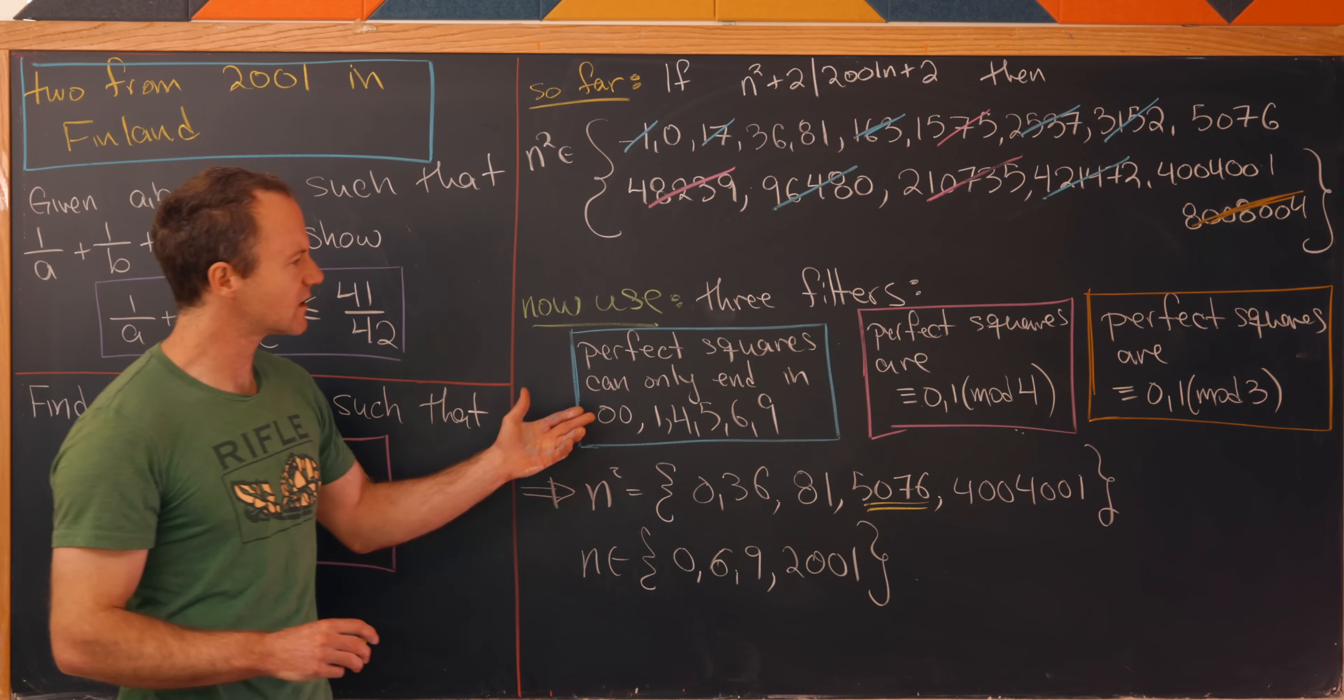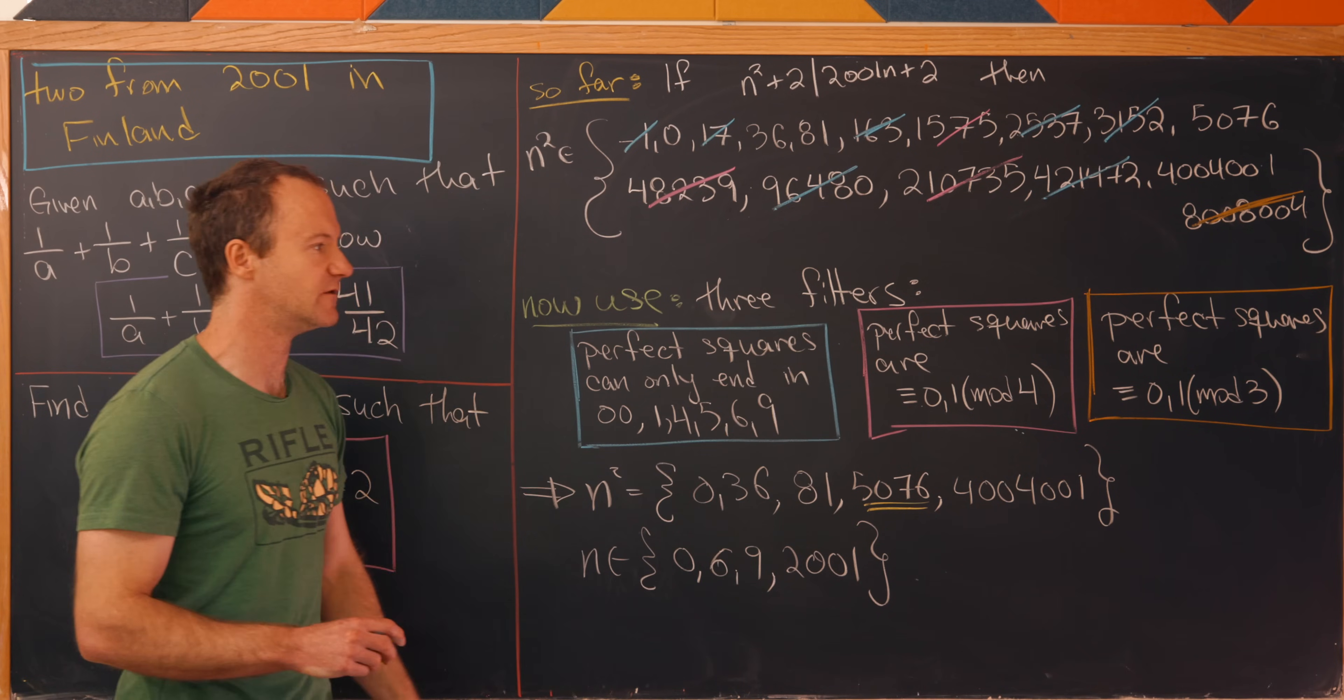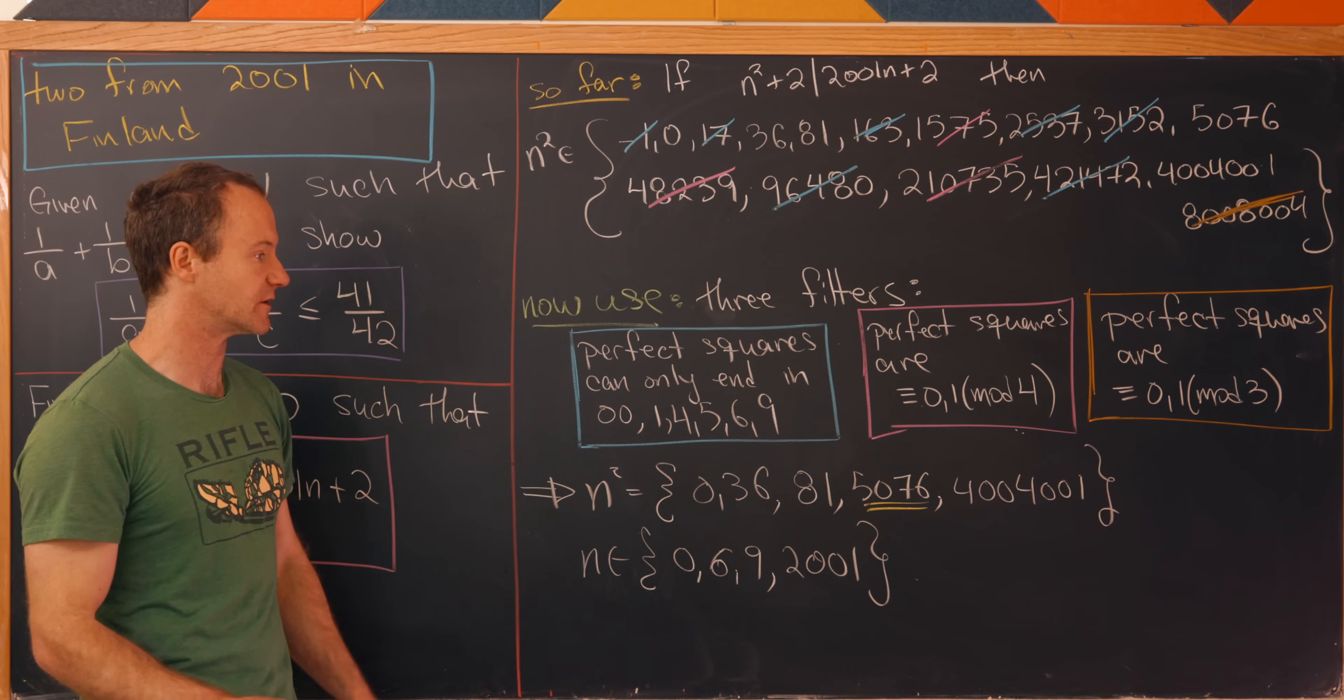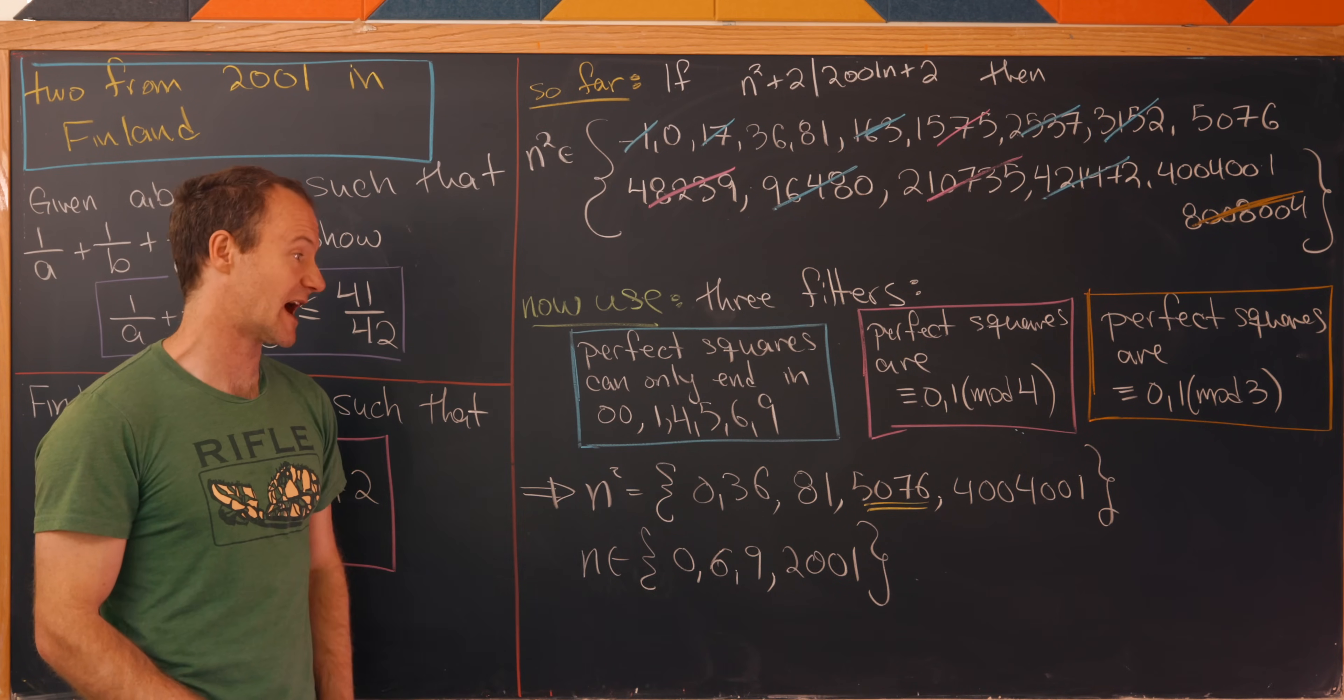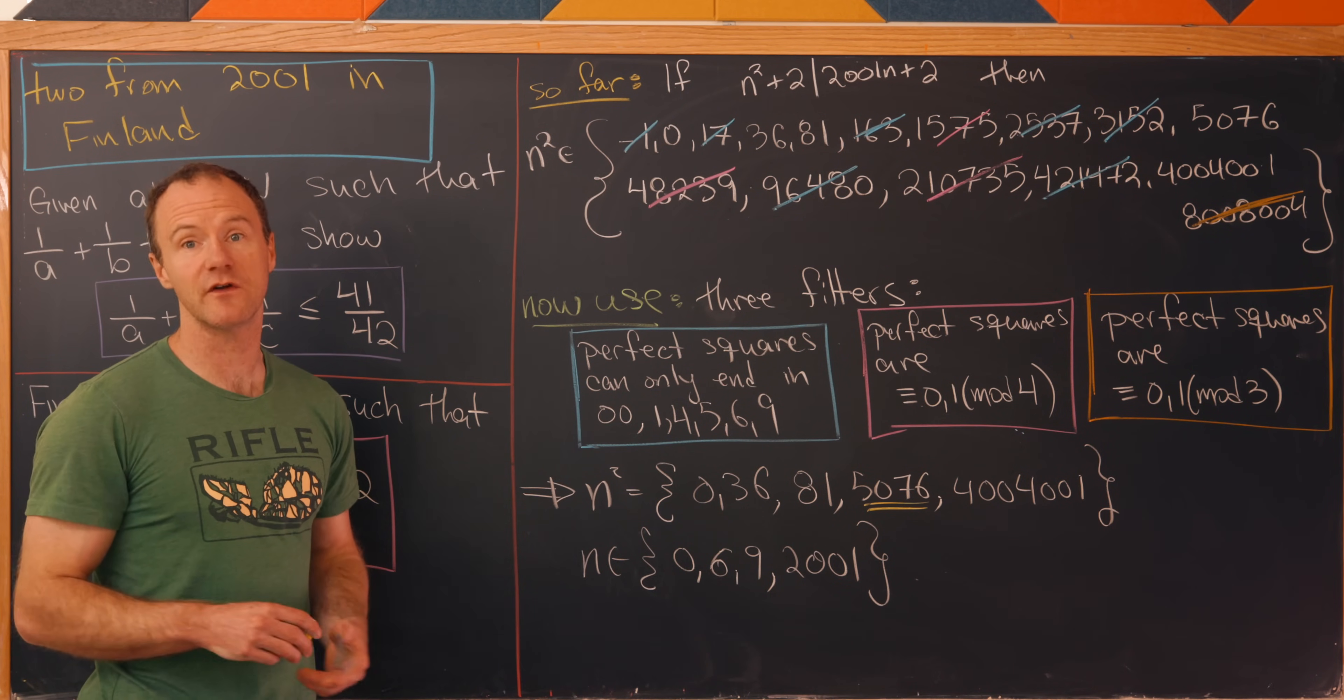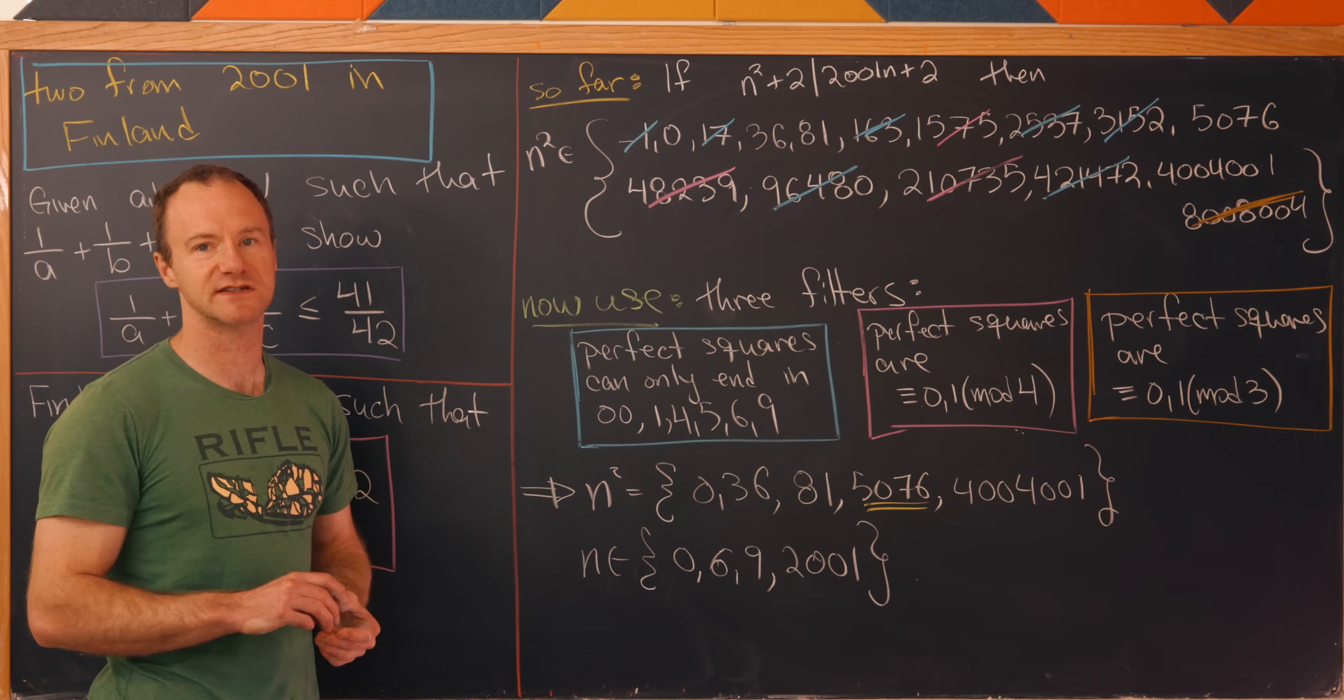And also, is there another filter that I could have used, a maybe well-known filter, that would have filtered this 5076 out, meaning that we wouldn't have to check it? Post if you know that in the comments as well, and that's a good place to stop.